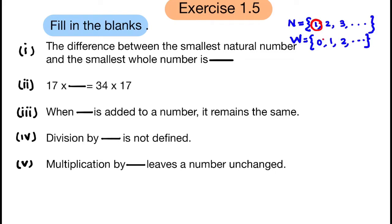The smallest natural number is 1 and the smallest whole number is 0. So 1 minus 0 is equal to 1. The difference between the smallest natural number and the smallest whole number is 1. Second question: 17 multiplied by ___ is equal to 34 multiplied by 17.